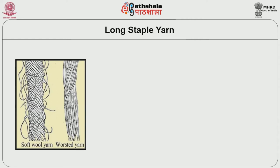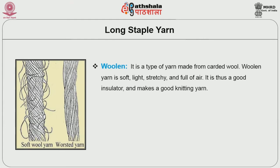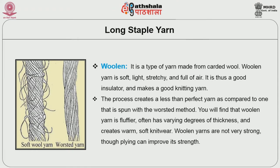Now we are going to look into woolen yarn. This is a type of yarn made from carded wool. Woolen yarn is soft, light, stretchy, and full of air. It is thus a good insulator and makes a good knitting yarn. The process creates a less-than-perfect yarn compared to that spun with the worsted method. Woolen yarn is fluffier, often has varying degrees of thickness, and creates warm, soft knitwear. Woolen yarns are not very strong, though plying can improve its strength.